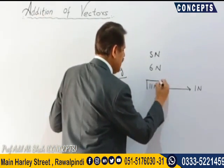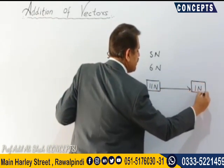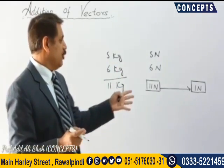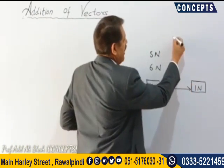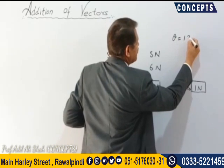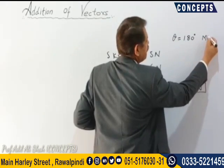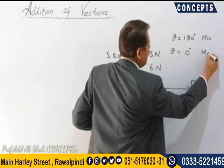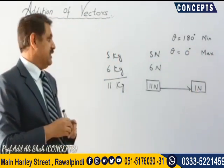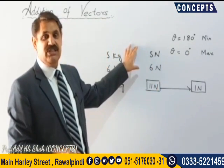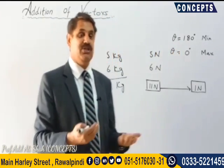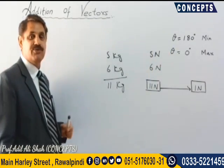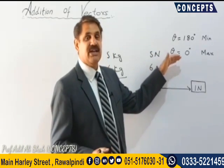When the two vector quantities are in opposite directions — that is, the angle between them is 180 degrees — the resultant is minimum. When the angle between the two vectors is 0 degrees, the resultant is maximum. So as the angle increases from 0 to 180 degrees, the resultant vector decreases.